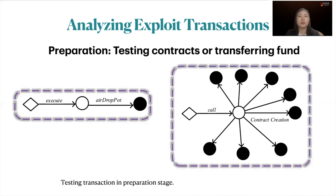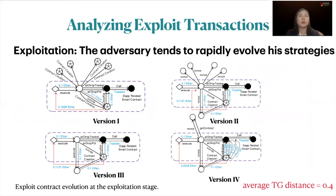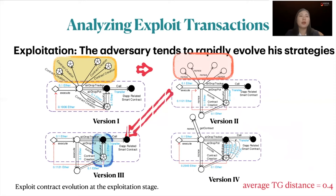In the exploitation stage, the adversary tends to rapidly evolve strategies during an attack. For example, in the bad randomness attack on Fomo3D, the first exploit variant creates many new contracts to predict the function's output using block information and the public logic of the contract. To improve upon this, the second variant evaluates existing contract blocks and utilizes contracts on winning blocks to generate a temporary contract to trigger the exploit, saving the cost of contract creation. In the final variant, the adversary collects all information from existing contracts and makes predictions before commanding the most compromised contract to invoke the airdrop function.